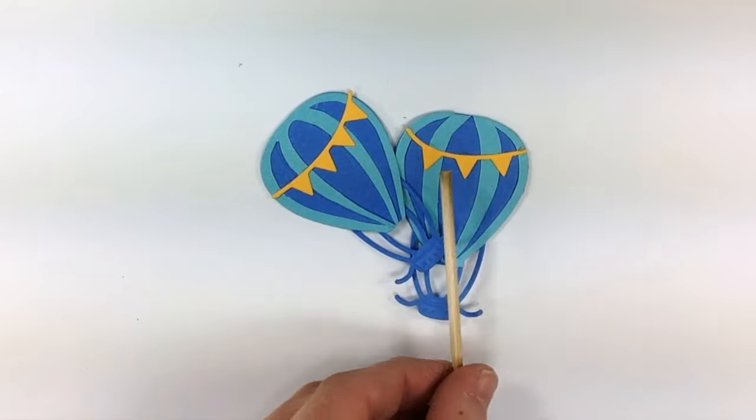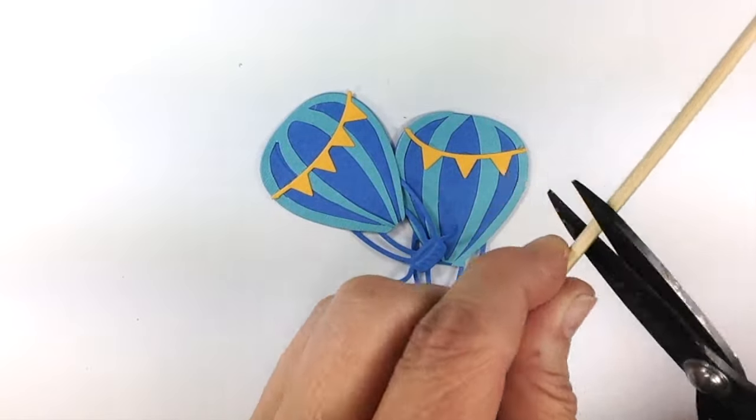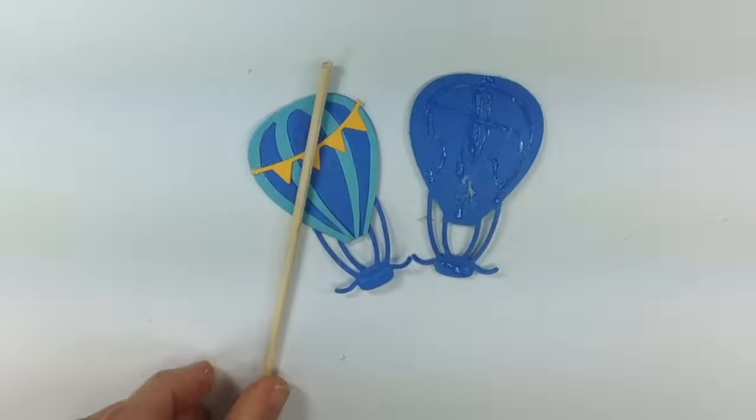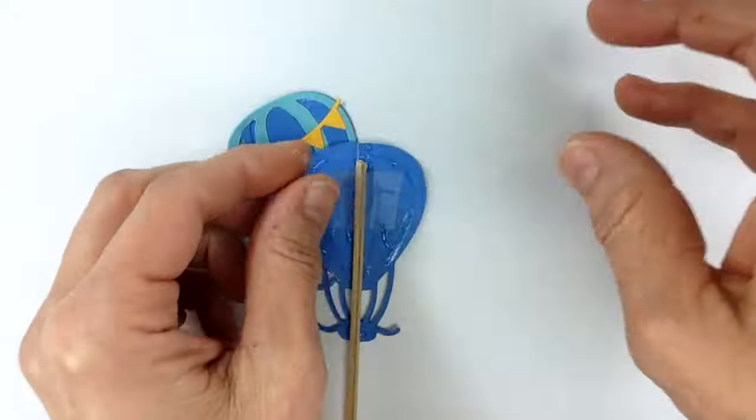Super easy. I decorated two balloon shapes and I'm using the wood skewer that came with the kit as the pick. I'm gluing and taping the skewer to only one side of the balloon.